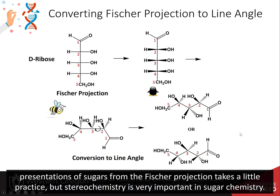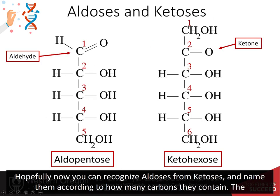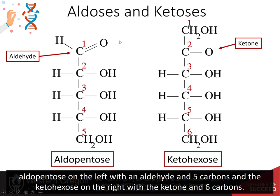Drawing the line angle presentations of sugars from the Fischer projections takes a little practice, but stereochemistry is very important in sugar chemistry. Hopefully now you can recognize aldoses from ketoses and name them according to how many carbons they contain: the aldopentose on the left with an aldehyde functional group and 5 carbons, and the ketohexose on the right with the ketone functional group and 6 carbons.